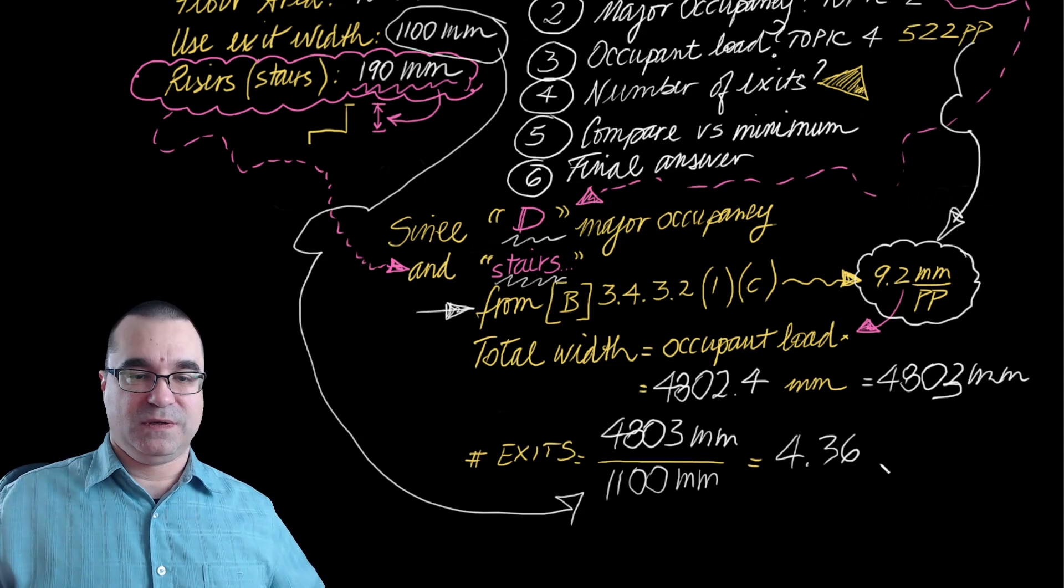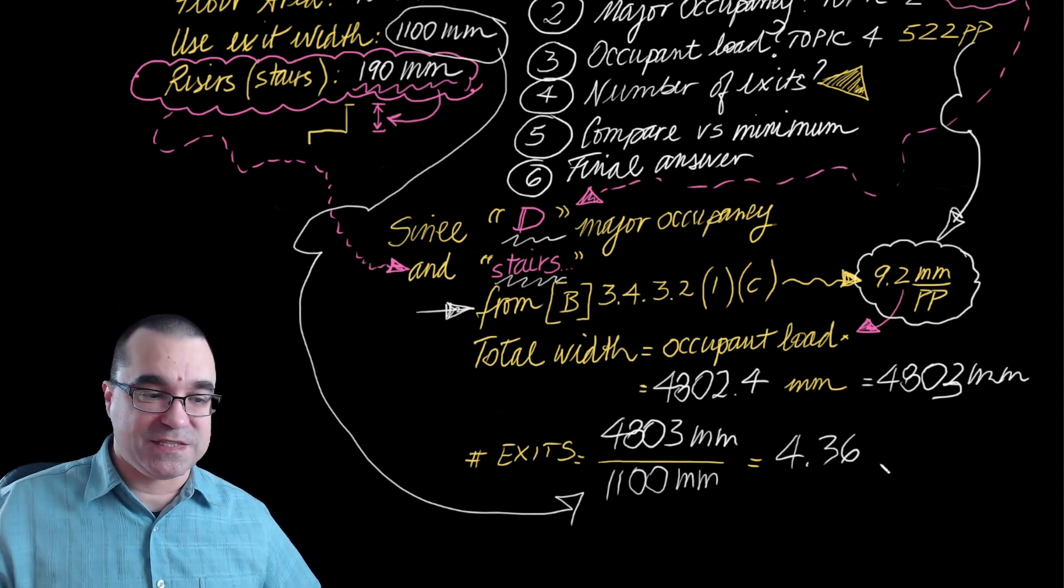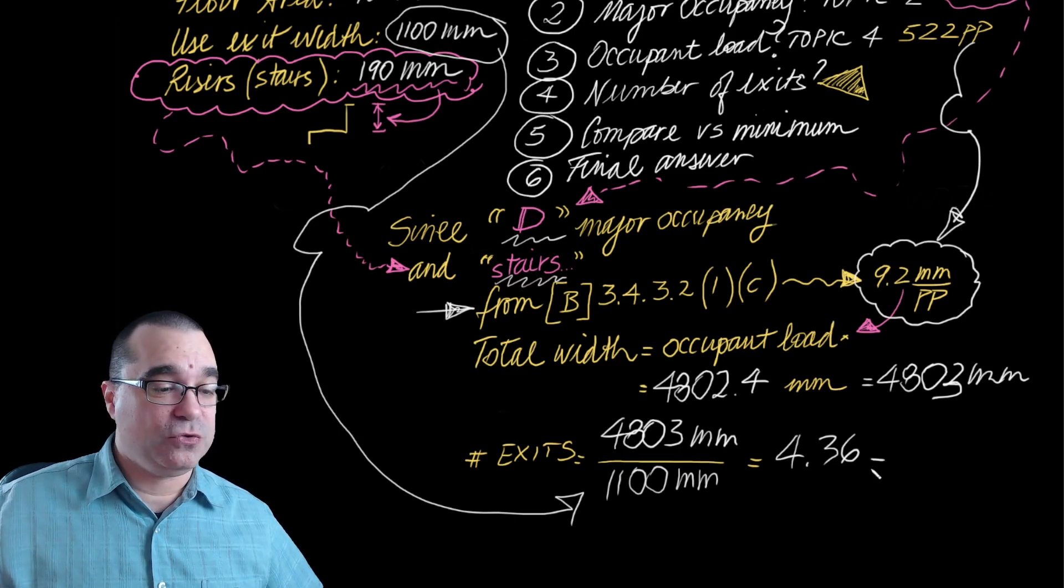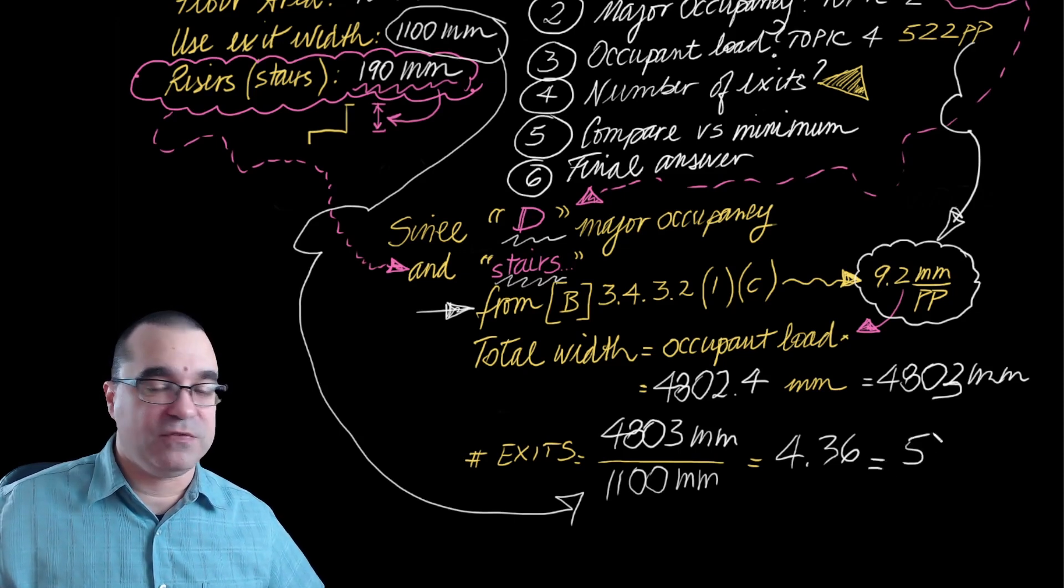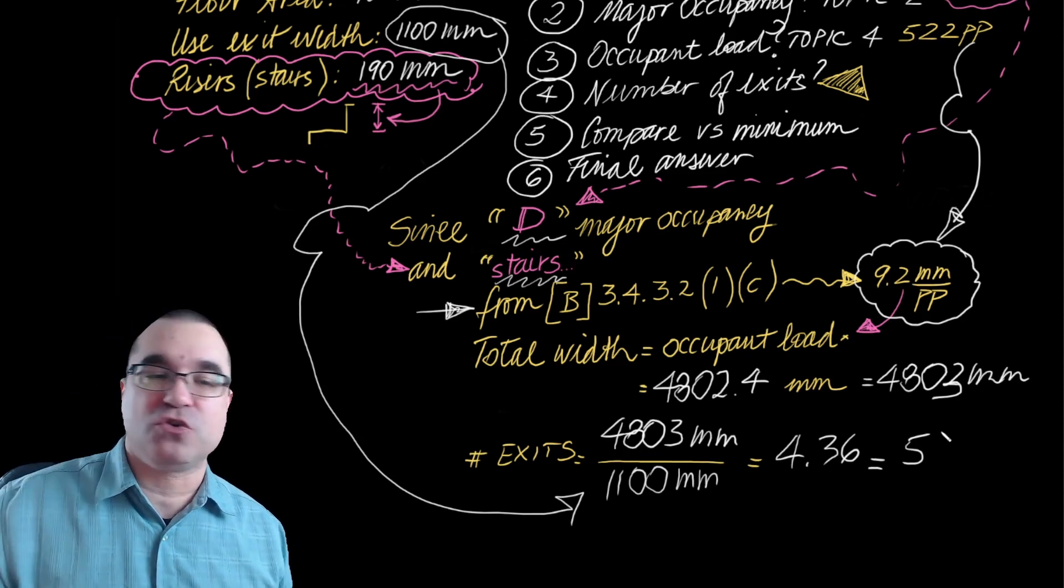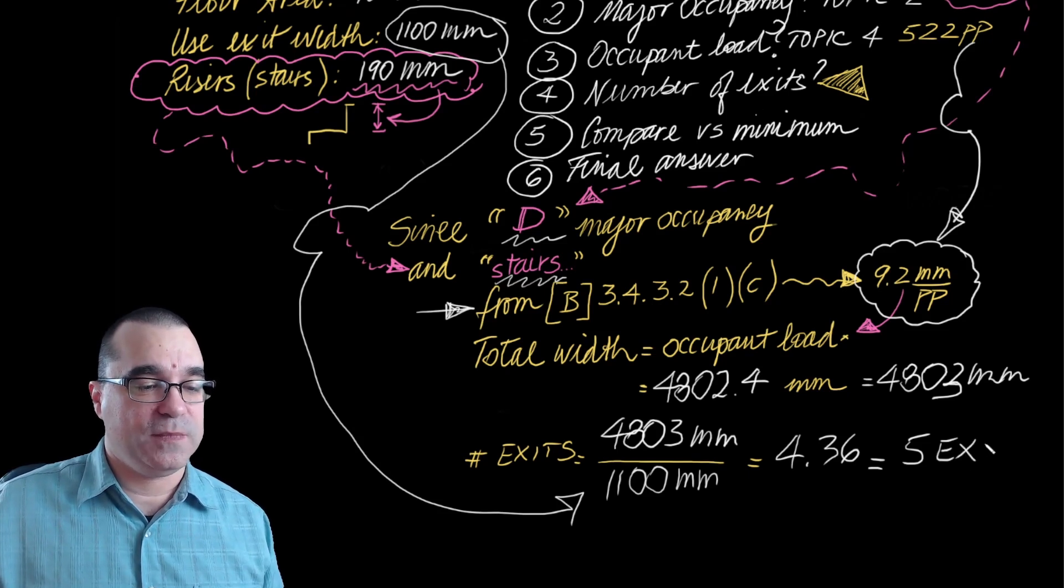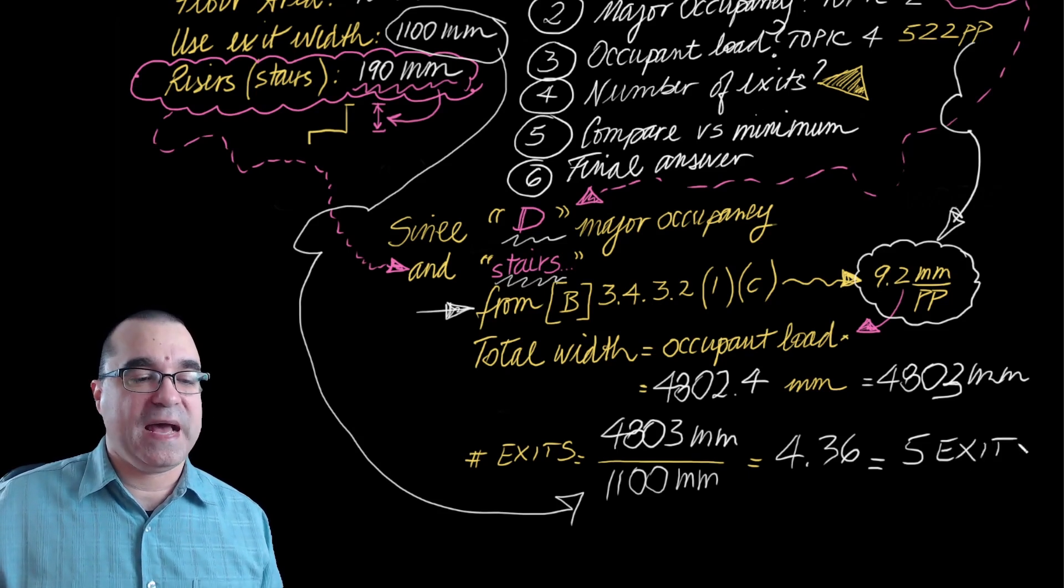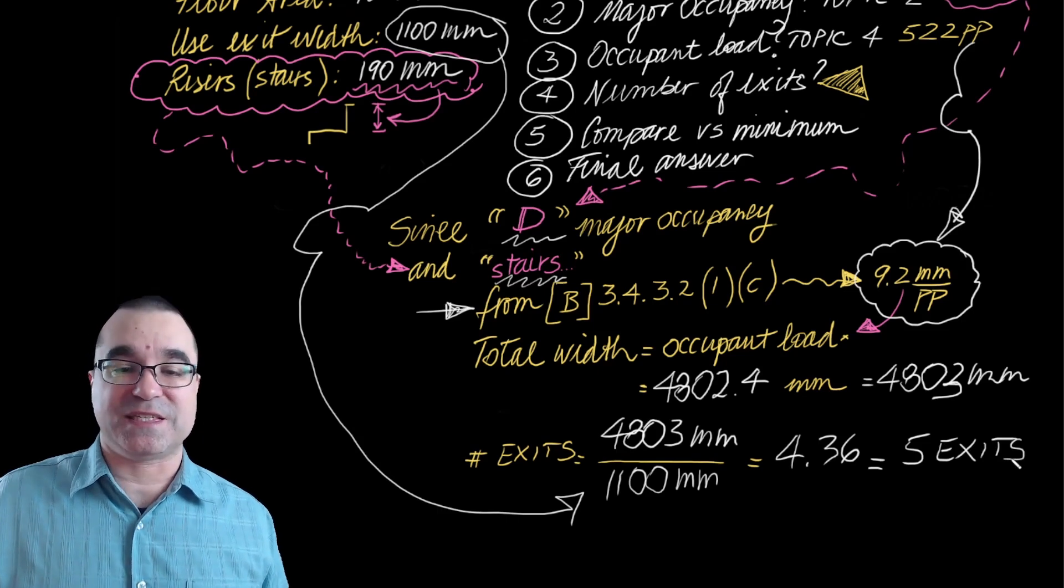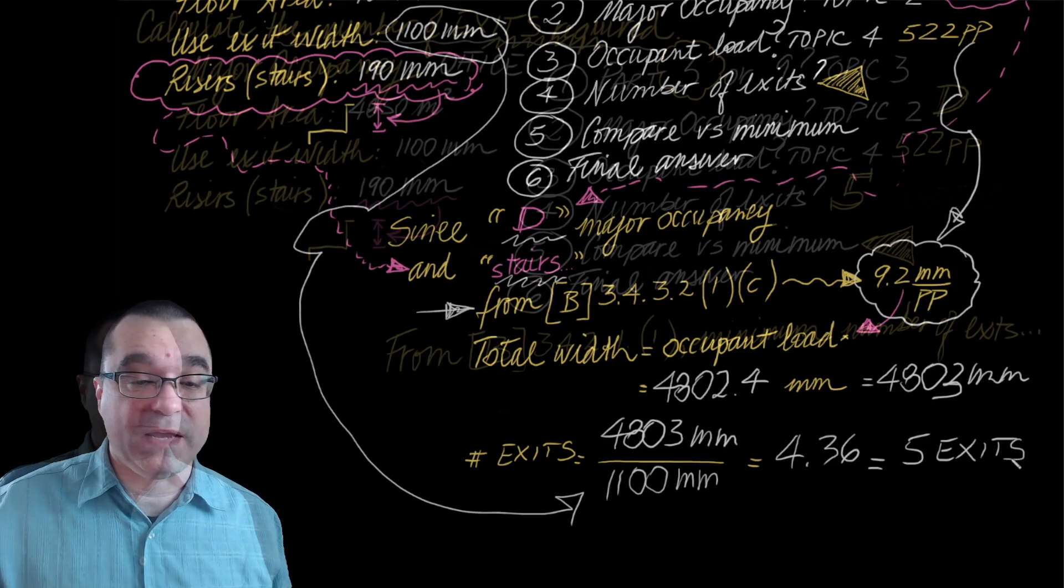Now, this means more than four exits. So what you do is you have to round up to five. You don't round down the number of exits because then you're not serving all 522 people. So what we get is based on this information we have right here, we need at least five exits. That's step number four. Let's move on to step number five.